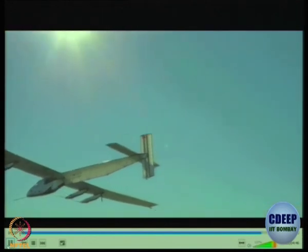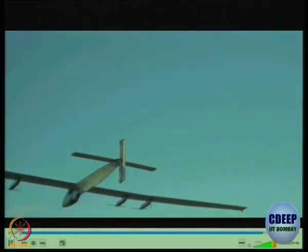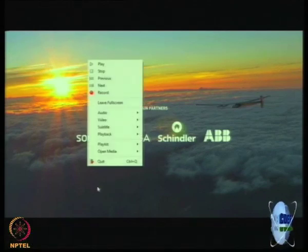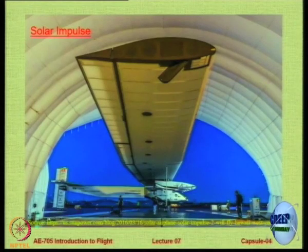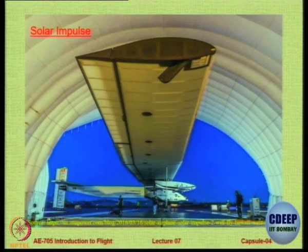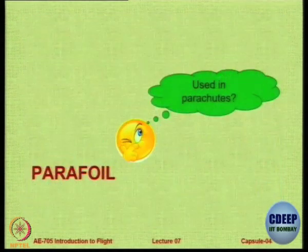The L/D max of Solar Impulse is 32, while the L/D max of a Boeing 747 is only 19. For such very special applications, you do need special aerofoils, and the aerofoil used here was very, very special.